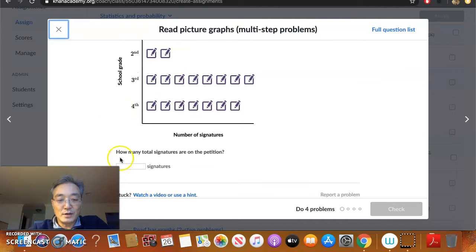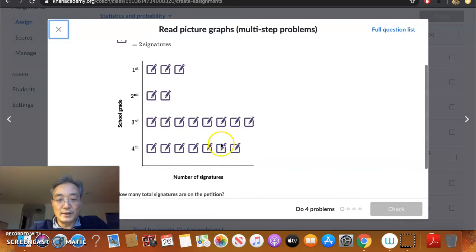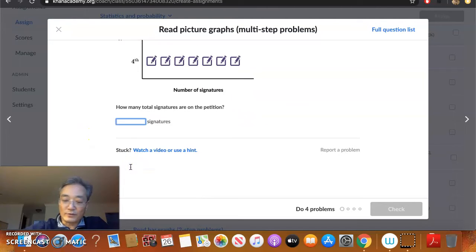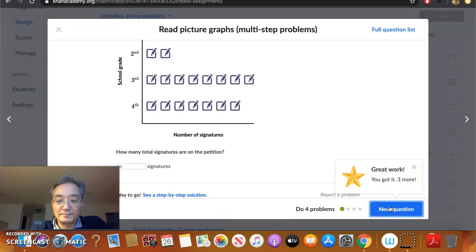So let's take a look at the question. How many total signatures are on the petition? So then now we have to just count all of them up and then multiply it by two. So we had five, four, eight, and seven here. So that's a total of twenty. So twenty times two is forty. So it looks like we have a total of forty signatures in this problem.